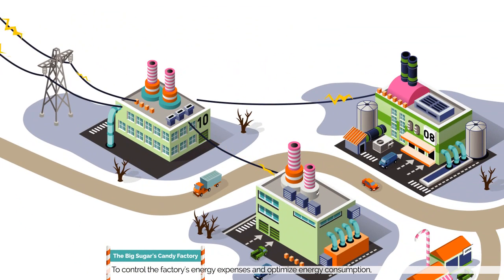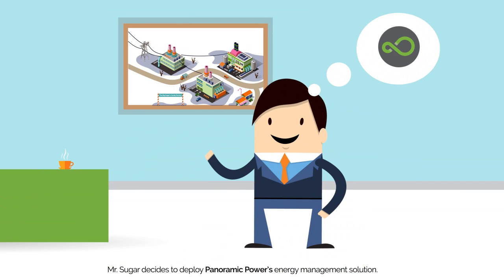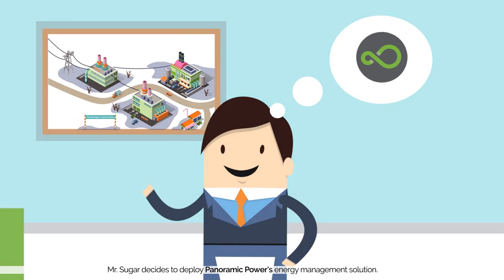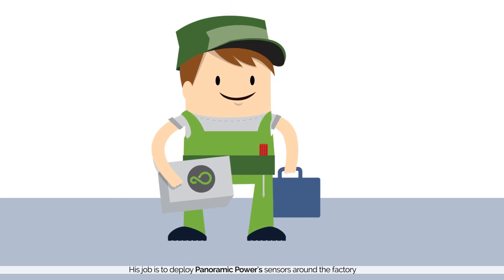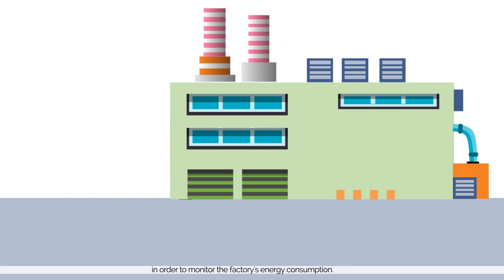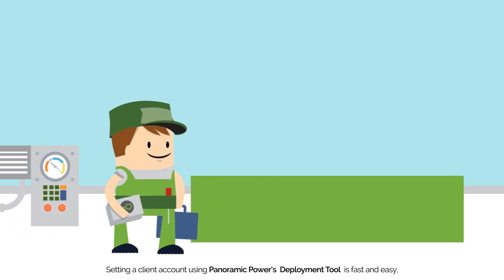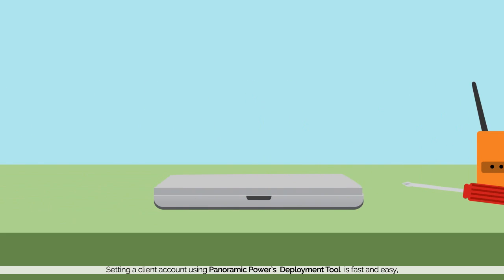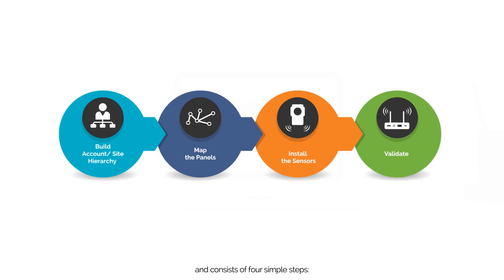To control the factory's energy expenses and optimize energy consumption, Mr. Sugar decides to deploy Panoramic Power's energy management solution. This is Joe. His job is to deploy Panoramic Power sensors around the factory in order to monitor the factory's energy consumption.